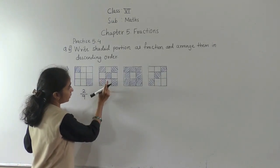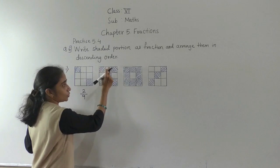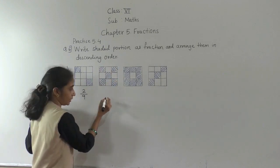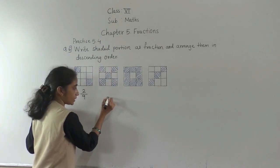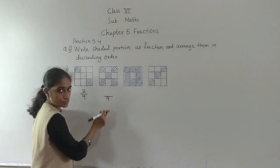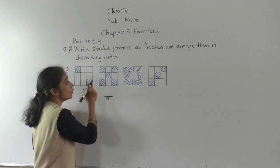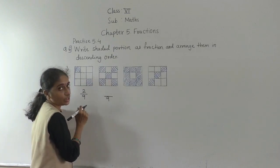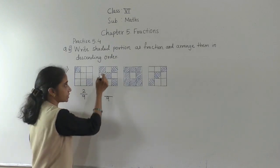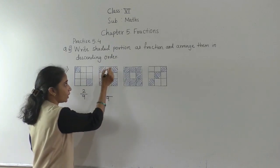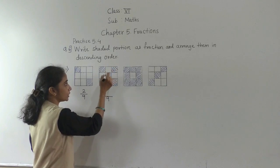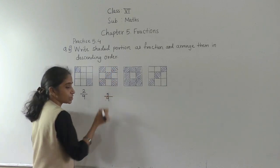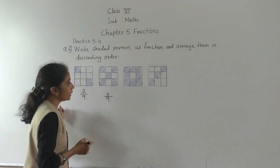Next figure: total parts are 9, so write 9 in the denominator's place. From that how many parts are shaded? 5 parts are shaded. See: 1, 2, 3, 4, 5 — 5 parts are shaded.